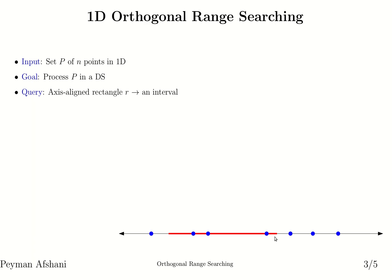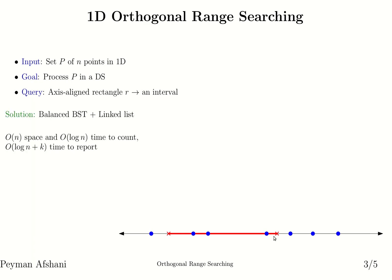So we have two variants of the problem. We might want to count the number of points inside this interval, or report the number of points inside this interval. The solution to this problem is actually very easy and you should be able to figure it out. If you build a balanced binary search tree on top of these points, and link these points in a linked list on top of that, then we can do both of these queries very efficiently.